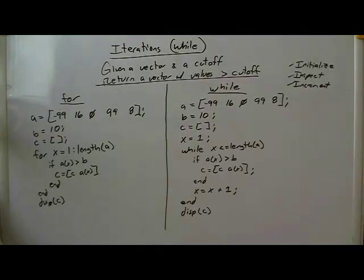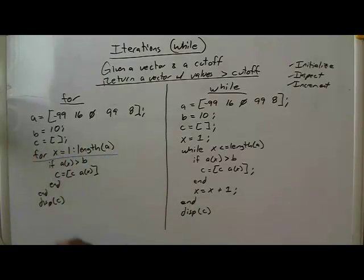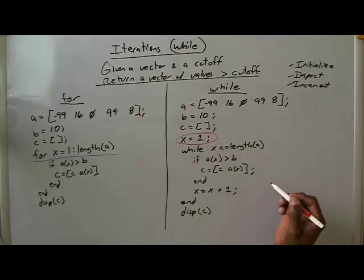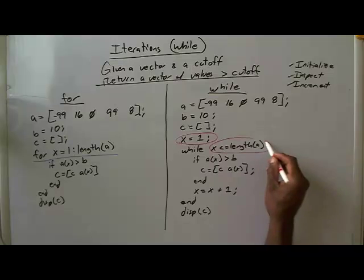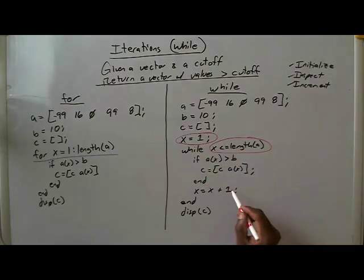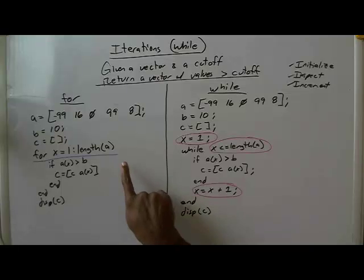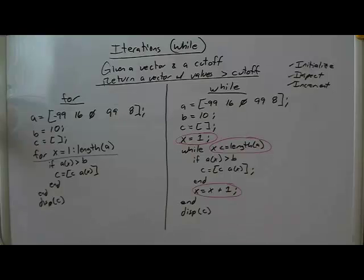Being very clear: with the for loop we did it in one step. With the while loop, we had to initialize our loop variable, inspect our loop variable every time we go through the while loop, and increment our loop variable — usually at the bottom of the while loop. That's the translation of the for loop line into the while loop.